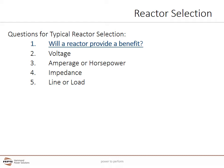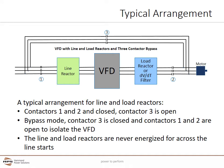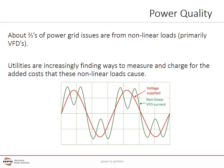Let's start with will a reactor provide a benefit. This diagram represents a typical VFD with an arrangement for both line and load reactors, also wired in what is called a classic 3-contactor bypass arrangement. When contactors 1 and 2 are closed and contactor 3 is open, the drive can run. In bypass mode, contactor 3 is closed and contactors 1 and 2 are open to isolate the VFD. Anything that rectifies AC to DC power is a non-linear load and produces current harmonics. The line side of a VFD is basically a DC power supply and is a classic 3-phase non-linear load.